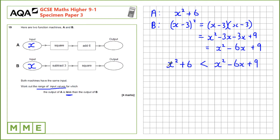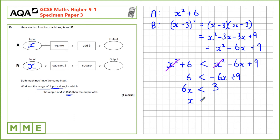We're told the output of A is less than the output of B, so we set up the inequality: X² + 6 < X² - 6X + 9. We can cancel the X² on both sides — it's positive so it won't affect the inequality direction — leaving 6 < -6X + 9. Rearranging: 6X < 3, then dividing by 6 gives X < 3/6, which is X < 1/2. That's our answer.